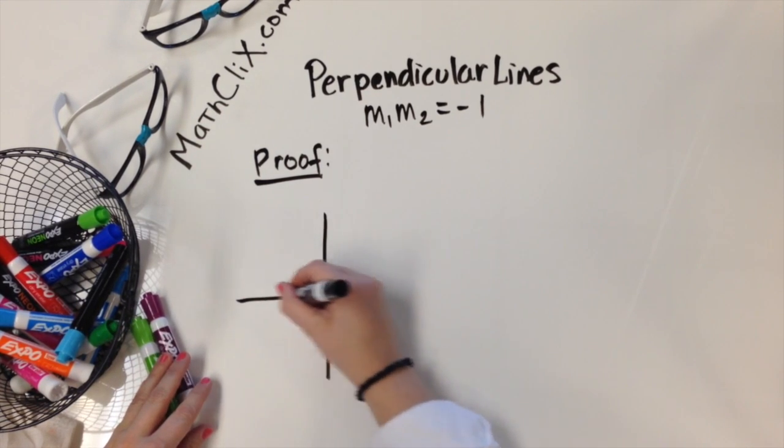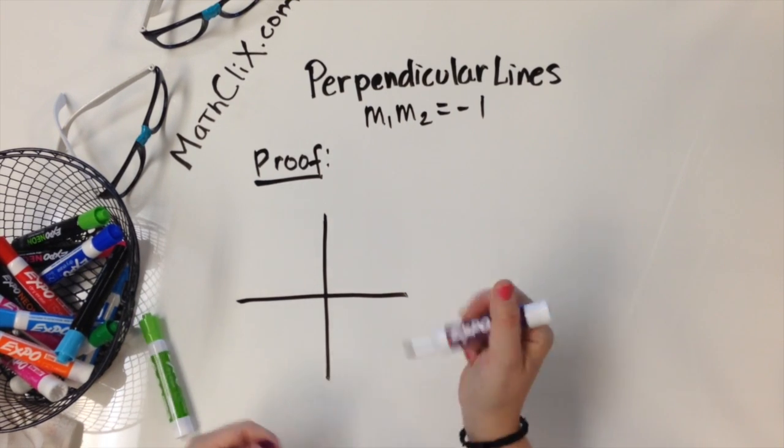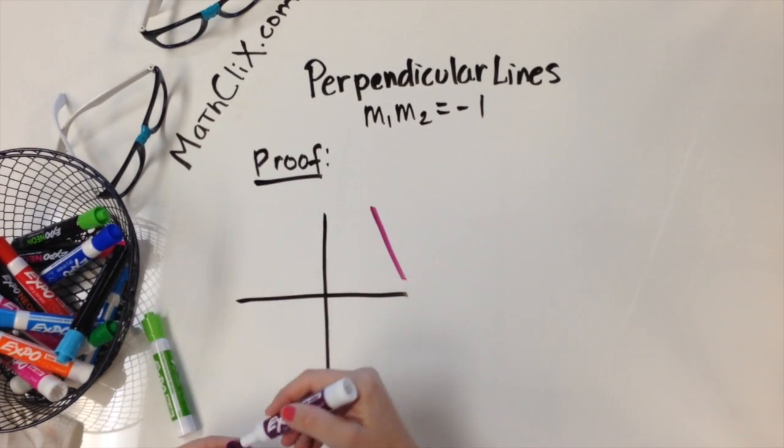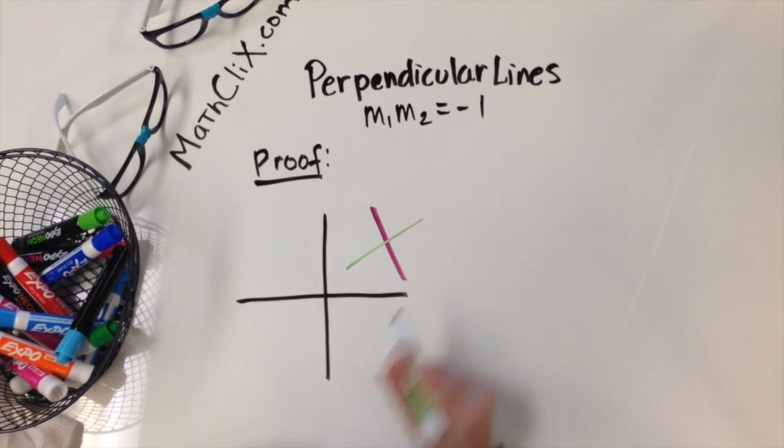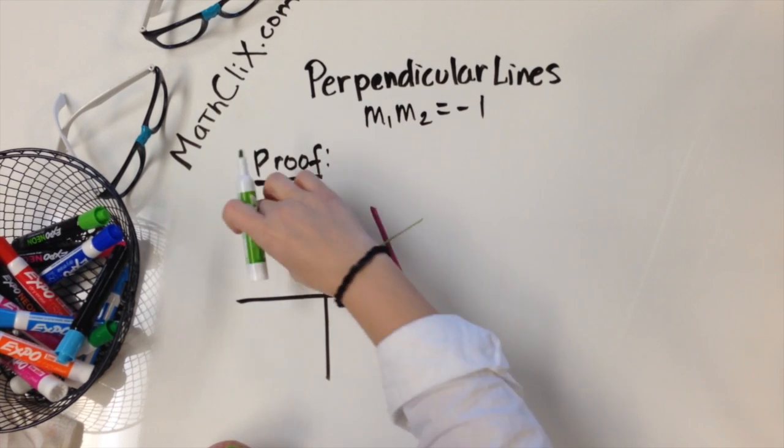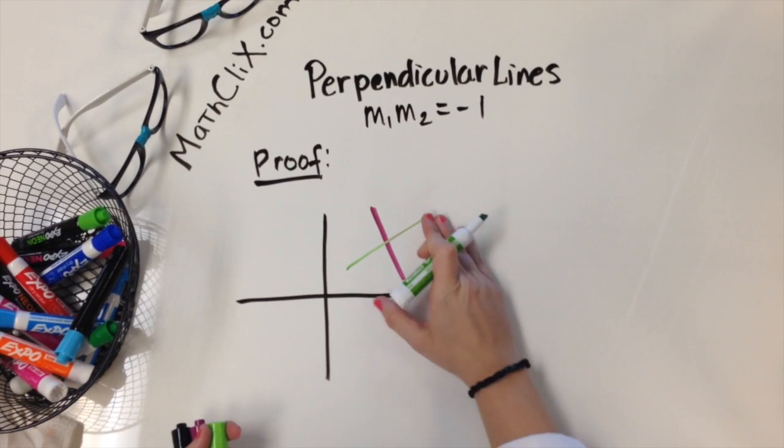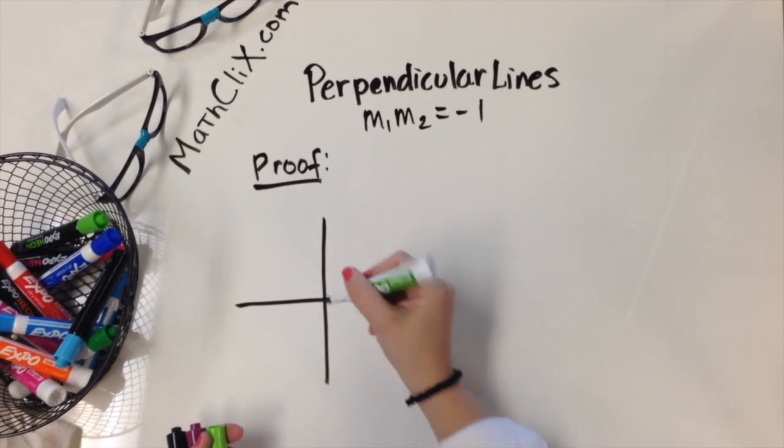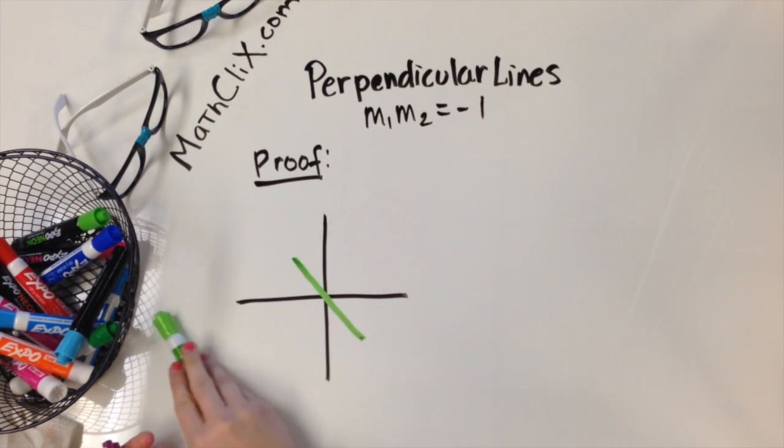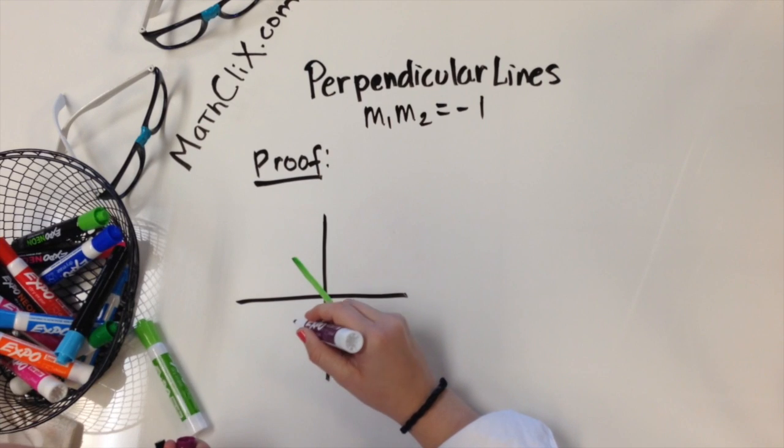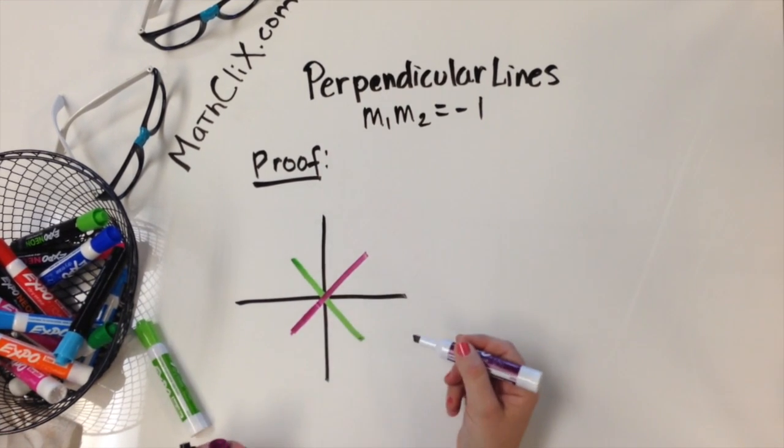So we can start by taking any two lines, and you can put them anywhere in the plane. We're going to draw them such that they look perpendicular, and then we're going to prove that they are. I can start by putting them here, or I can move them here or anywhere I want to, but for the purpose of this proof, I'm actually going to make it more simple by making them intersect at what looks like a right angle on the origin.